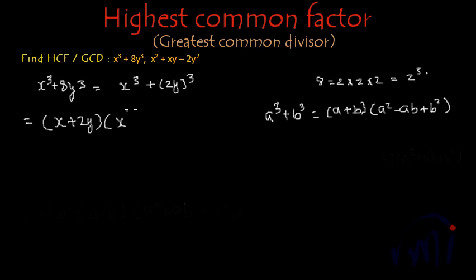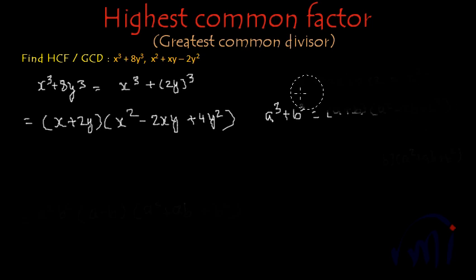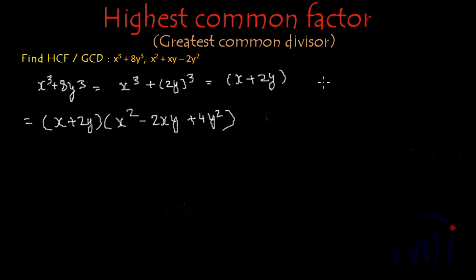...x square minus 2xy plus 4y square. So the factors of x cube plus 8y cube are x plus 2y multiplied by x square minus 2xy plus 4y square.